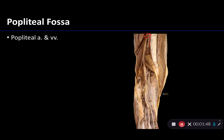As we make our way into the popliteal fossa, the most superficial structure is the popliteal nerve, then the popliteal vein, which is an accompanying vein to the popliteal artery, and then the popliteal artery itself. The depth of the popliteal artery and it being obscured by other structures is why getting a strong popliteal pulse is sometimes difficult — it's a difficult pulse point to palpate.